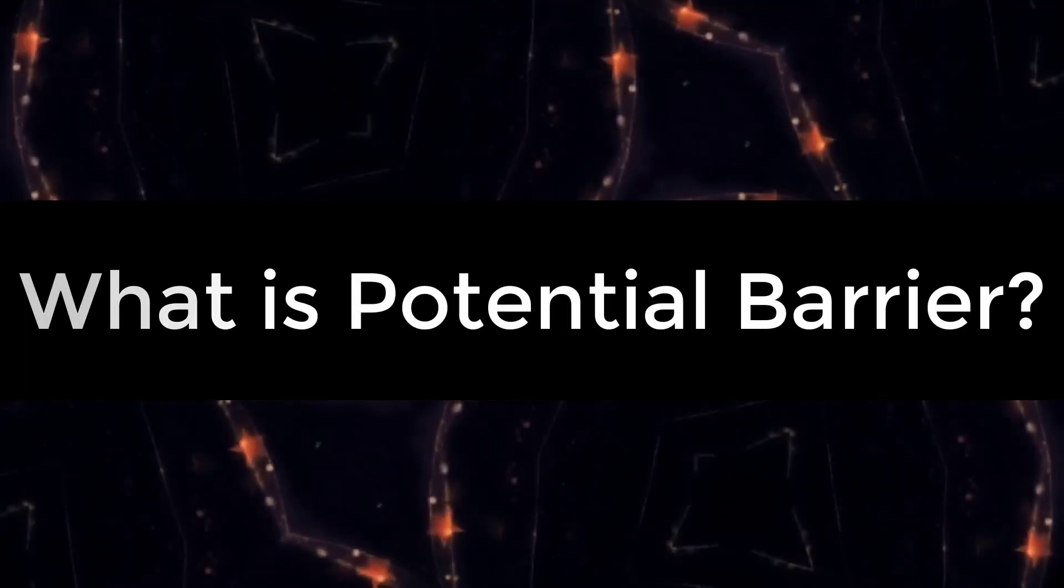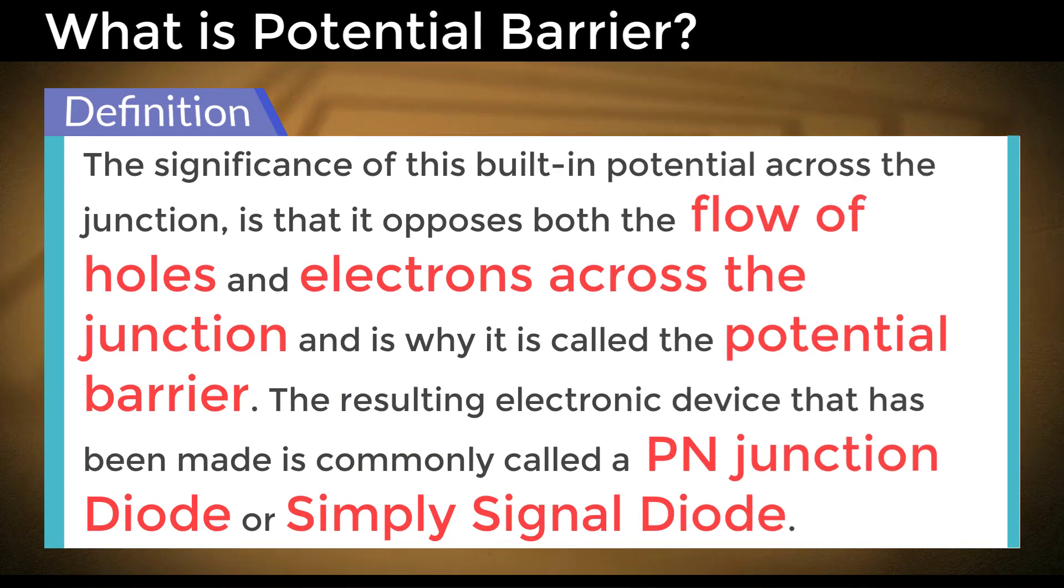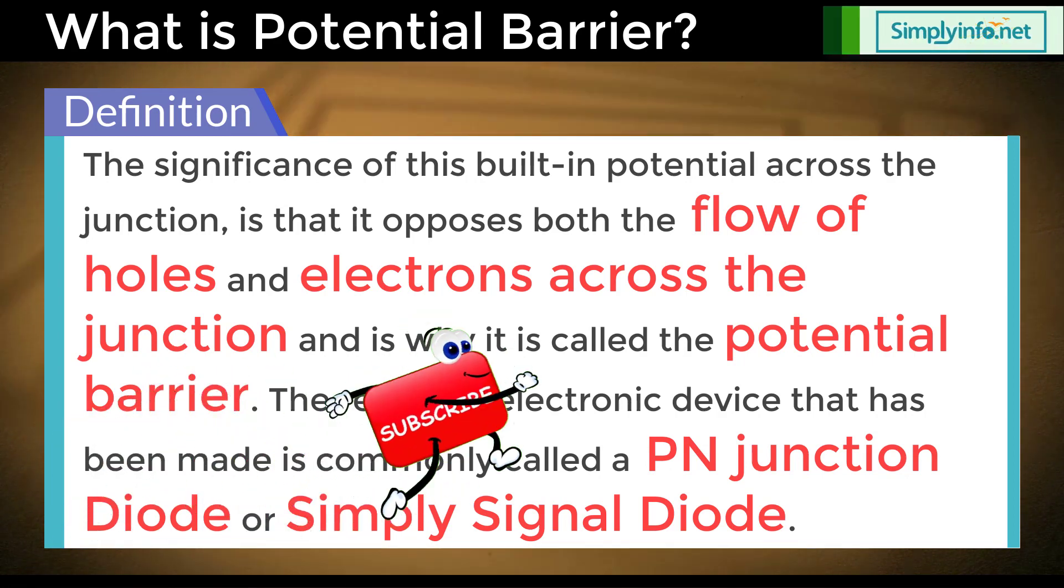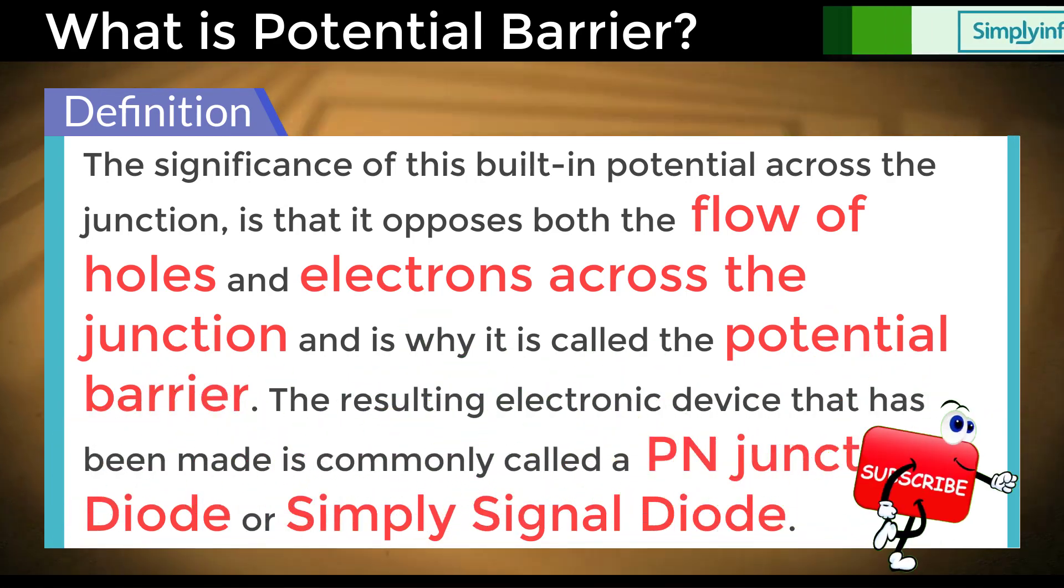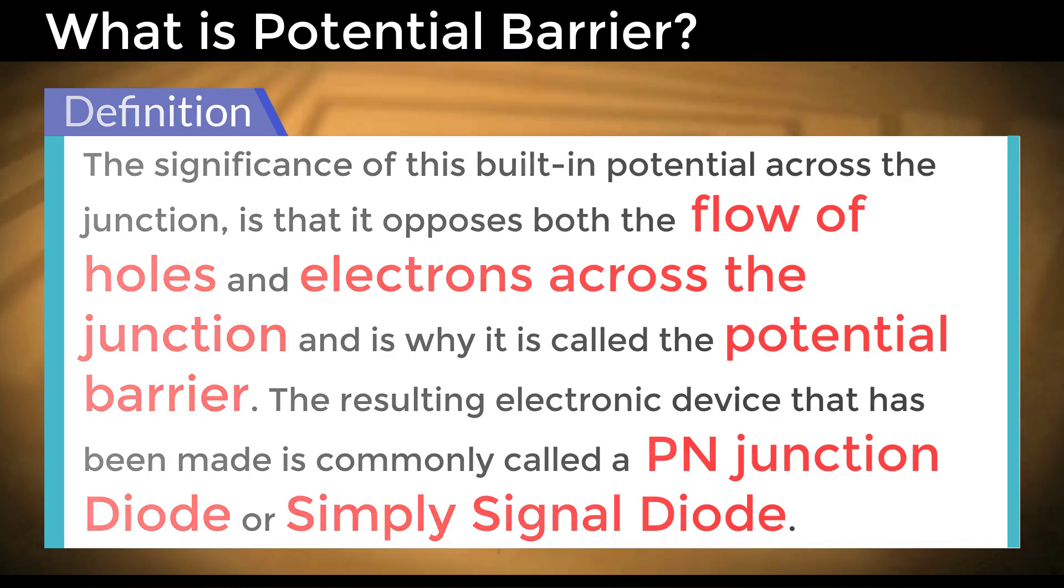What is Potential Barrier? The significance of this built-in potential across the junction is that it opposes both the flow of holes and electrons across the junction, and is why it is called the potential barrier. The resulting electronic device that has been made is commonly called a PN junction diode or simply signal diode.